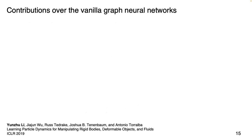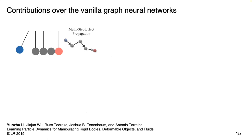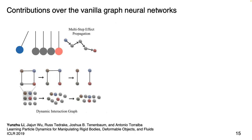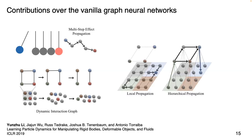We introduce improved techniques over vanilla graph neural networks. First, we use multi-step message passing to propagate information multiple steps over the graph to capture higher-order interactions. Second, due to memory limits, constructing a fully connected graph over the entire particle set is infeasible as particle count increases, so we build dynamic graphs where each particle connects only to nearby particles within a certain distance. Third, since rigid objects are globally coupled — a small perturbation on one corner instantly propagates to all particles — we introduce hierarchical graphs, clustering particles and assigning an additional parent particle as the root of each cluster for more efficient long-distance message passing.